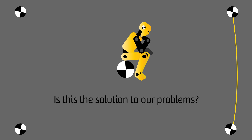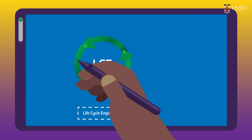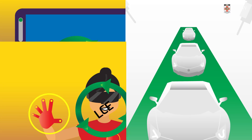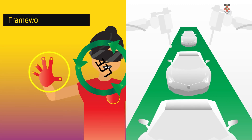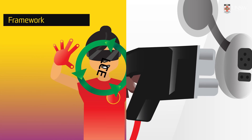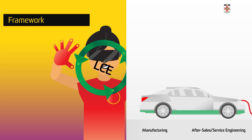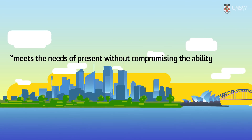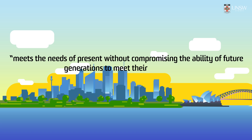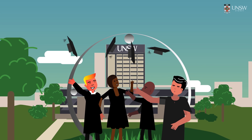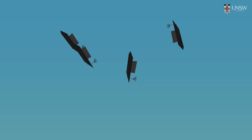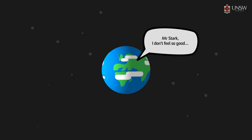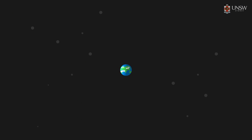Is this the solution to our problems? On its own, lifecycle engineering isn't enough to solve the sustainability crisis. However, when applied within the sustainability framework which takes into account the planetary boundaries, we can develop more sustainable products and services that allow us to meet the needs of the present without compromising the ability of future generations to meet their own needs. So, as you complete your studies and start your careers, keep in mind the role you will play in the IPAT equation. And always remember this: there is no planet B.